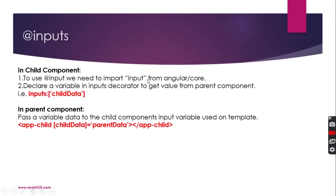I have divided the steps into two parts. First part: in the child component, we need to use input. After importing input, you need to declare a variable within an array — that can be multiple or just one. Suppose here I have taken one value called child data, and I need to send data from my parent to this child data. If you see, I have imported the selector of the child and I am passing this variable in the child selector and passing the data from the parent selector. If we do the practical, then we will understand it properly. So let's go and implement this.